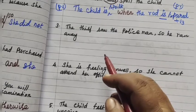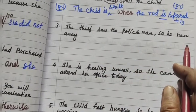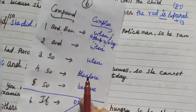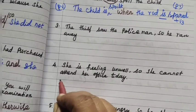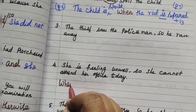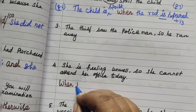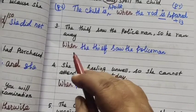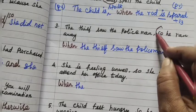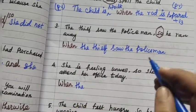The thief saw the policeman and he ran away. In that case, you are using 'when'. So: when the thief saw the policeman, he ran away.